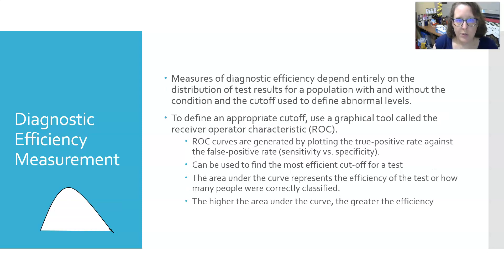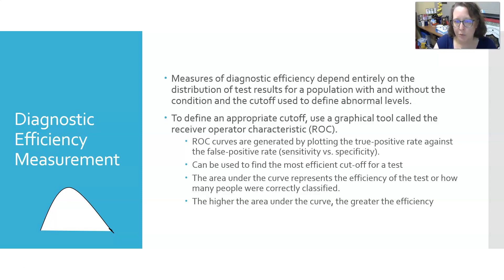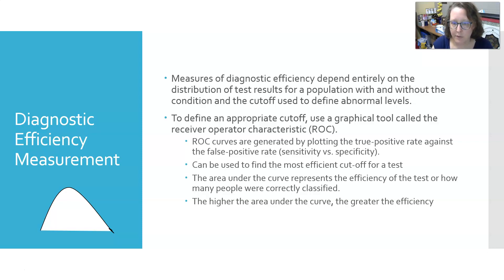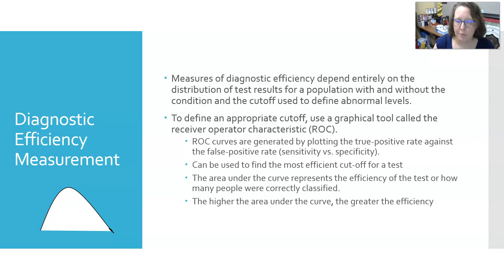There is also a measure of diagnostic efficiency, which depends entirely on the distribution of test results for a population with and without the condition and the cutoff used to define abnormal levels. To define an appropriate cutoff, they use a graphical tool called the Receiver Operator Characteristic, or ROC. ROC curves are generated by plotting the true positive rate against the false positive rate — essentially sensitivity versus specificity — and can be used to find the most efficient cutoff for a test. The area under the curve represents the efficiency of the test, or how many people were correctly classified as either having or not having the disease.